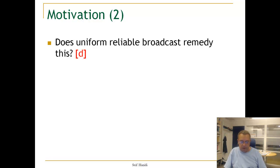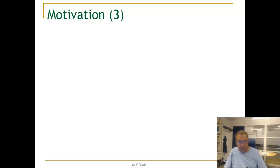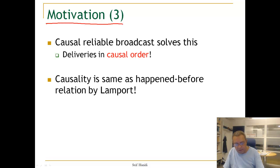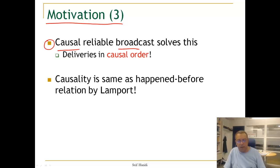The question that comes to mind first is: does uniform reliable broadcast remedy this? The answer is that reliable broadcast does not impose any order on messages being broadcast. Whereas what we want is to impose order among messages broadcast, and we get this by using causal reliable broadcast, which delivers all messages in a causal order.